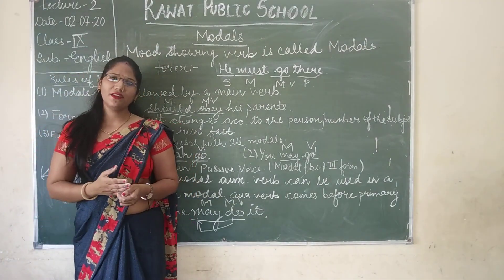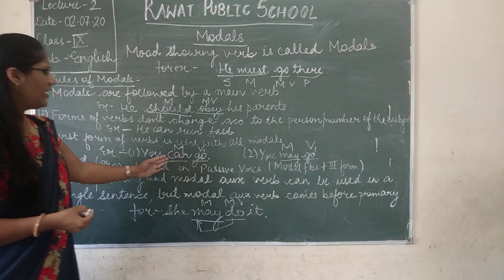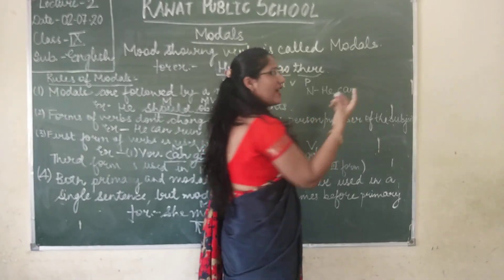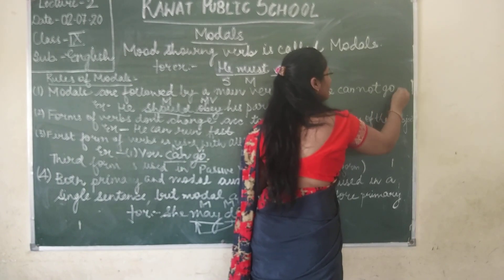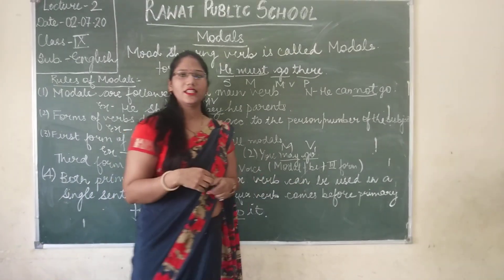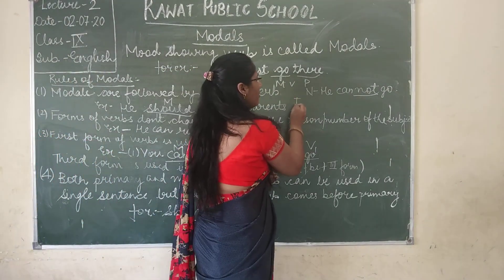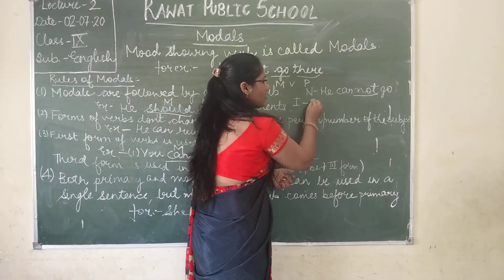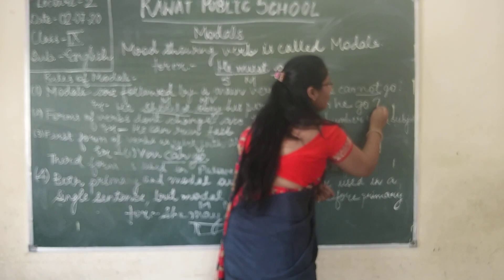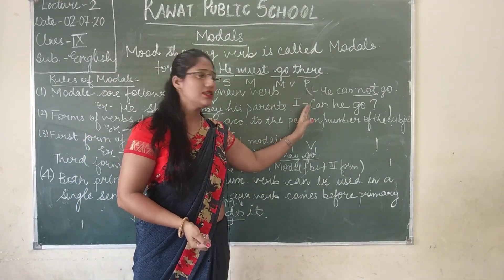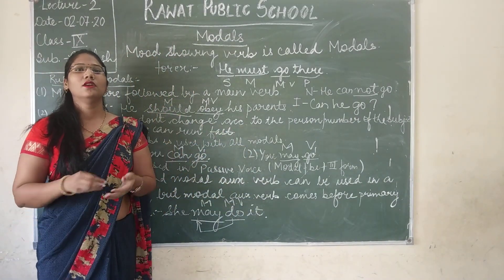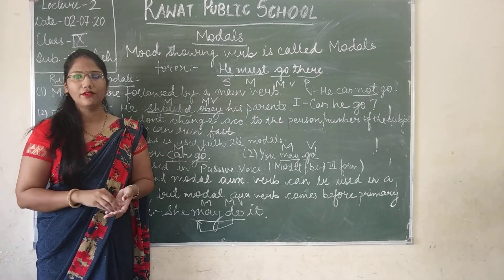For negative sentences, we simply add 'not' after the modal — for example, 'he cannot go.' For interrogative sentences, the modal comes before the subject — for example, 'can he go?' followed by a question mark. These are the rules to be followed while using a modal in a sentence. Please revise these in your copies and complete the work as soon as possible. Thank you.